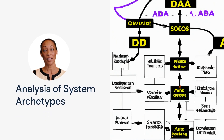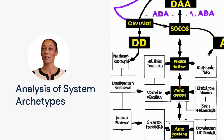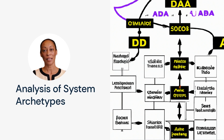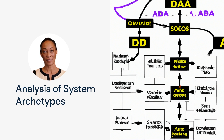So how do we analyze these archetypes? Well, we can use tools like causal loop diagrams and stock and flow diagrams to help us understand the behavior of complex systems. By understanding the behavior of these archetypes, we can make predictions about the future behavior of complex systems.